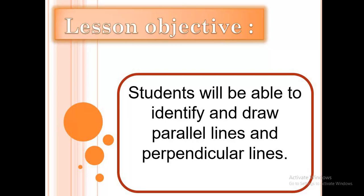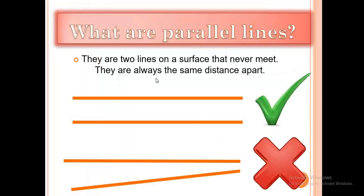What are parallel lines? There are two lines on a surface that never meet — they are always the same distance apart. Look here at what parallel lines should be: we have two lines, but these lines never meet.